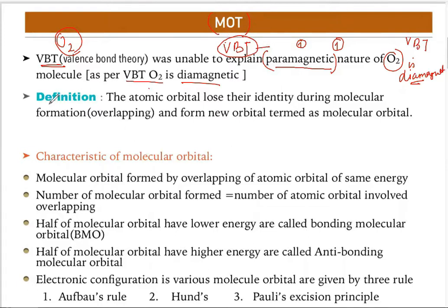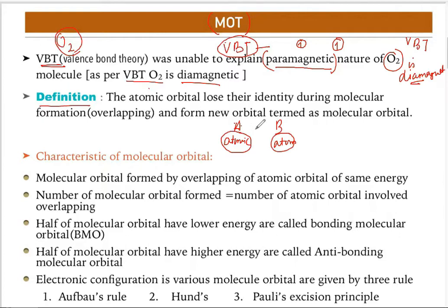Molecular Orbital Theory states: atomic orbitals lose their identity during molecular formation or overlapping and form new orbitals called molecular orbitals. When atom A and atom B combine, the characteristics of their atomic orbitals are lost, and they combine to form a new set of orbitals — those new orbitals are called molecular orbitals.